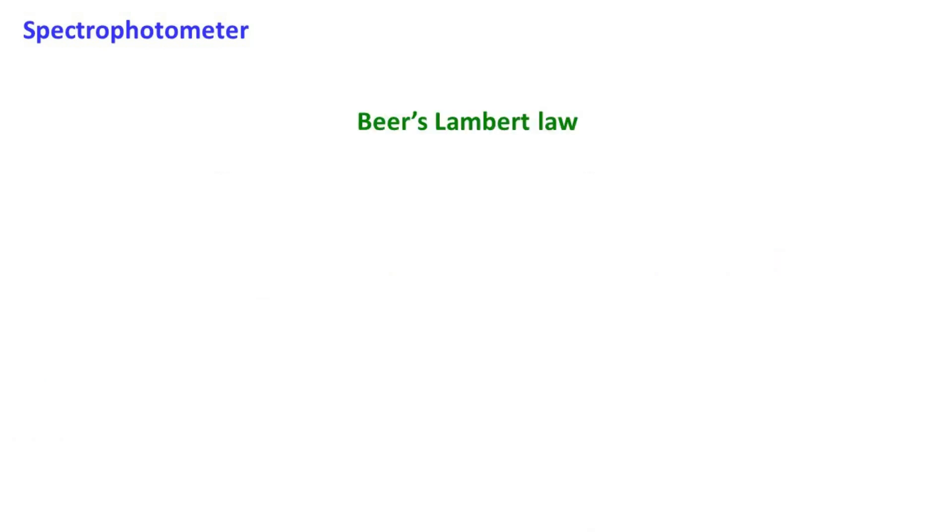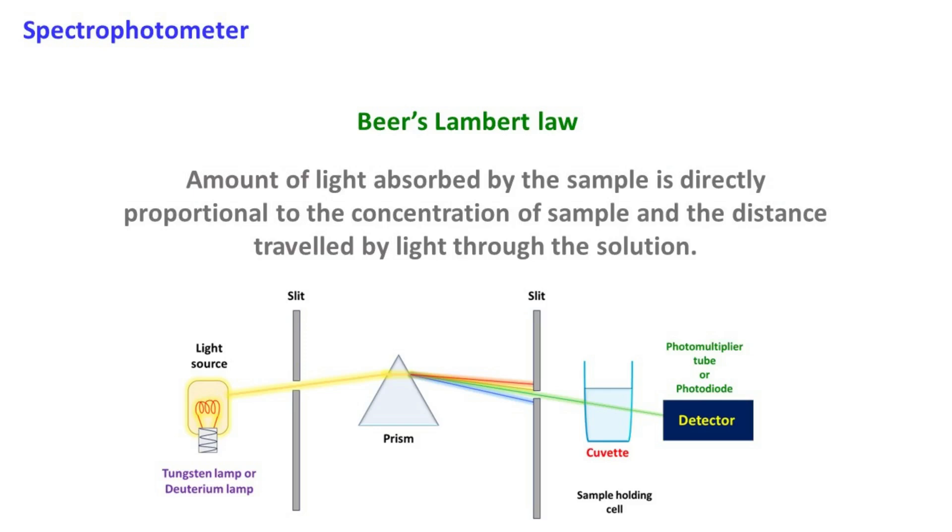Beer-Lambert's law states that the amount of light absorbed by the sample is directly proportional to the concentration of sample and the distance travelled by light through the solution.